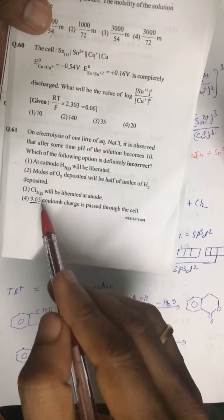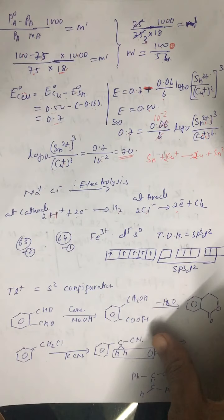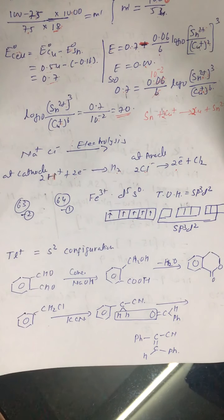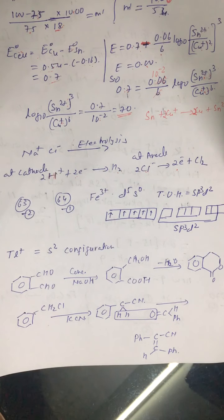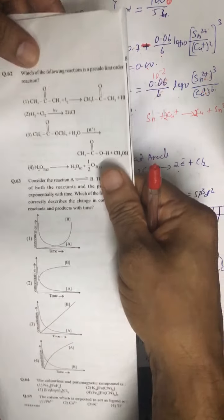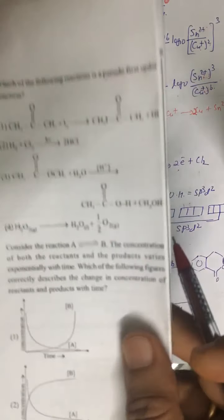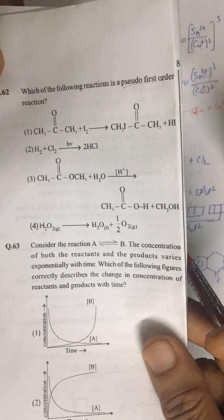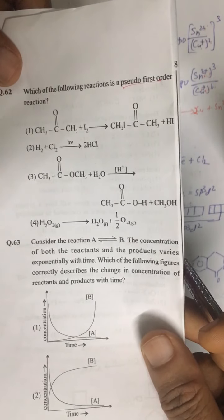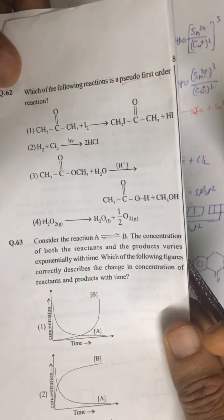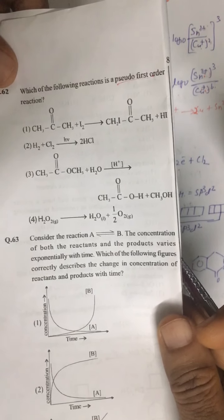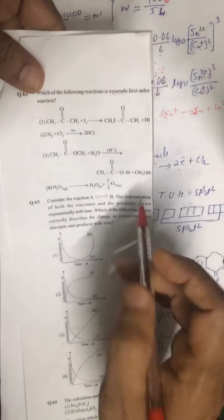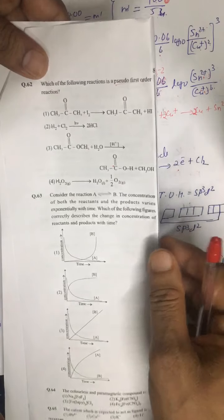Question number 62 asks which of the following is a pseudo first-order reaction (also called pseudo-unimolecular reaction). Hydrolysis reactions are pseudo-unimolecular because water is taken in excess. When a reactant is in large excess, it is not included in the rate law since its concentration change does not affect the rate. The correct answer is the third option — the hydrolysis reaction.